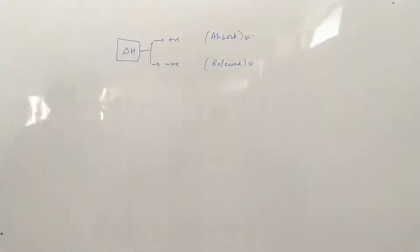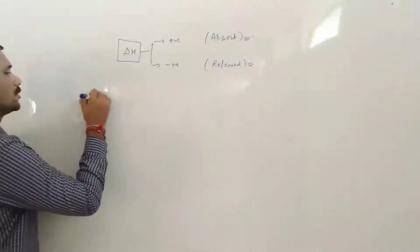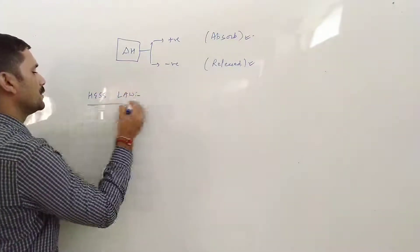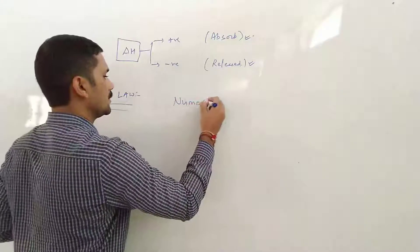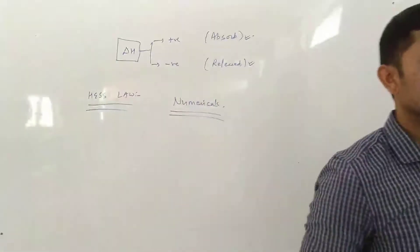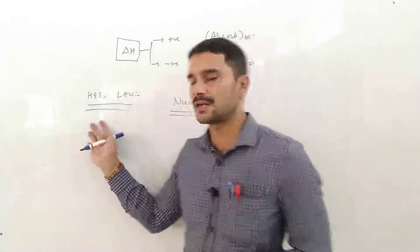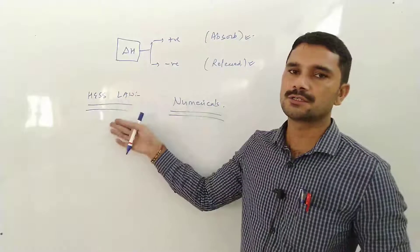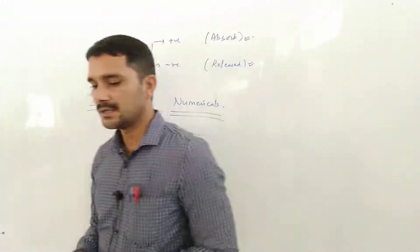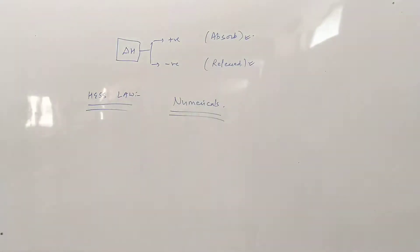Ab bacchon, next lecture mein hum ek law padhenge — that is called Hess's Law — aur is Hess's Law ke upar based phir hum numericals practice karenge. Pichle lecture mein humne types of enthalpy padha tha, is lecture mein bhi humne types of enthalpy discuss kiya. Next lecture mein hum in sabhi enthalpies ka use karke Hess's Law study karenge, aur us law ko use karke numericals solve karenge jisme in sabhi enthalpies ki use hoti hai. That's all for today, thank you.